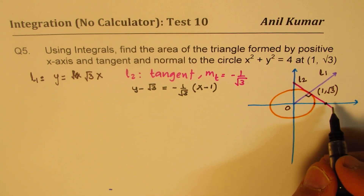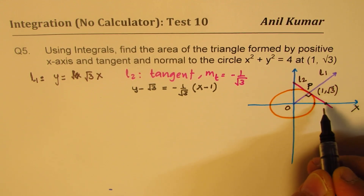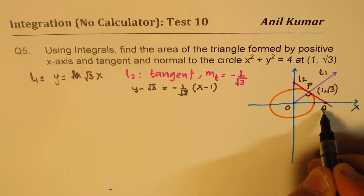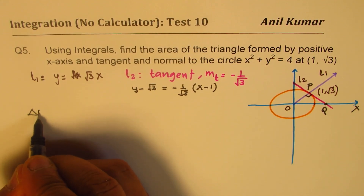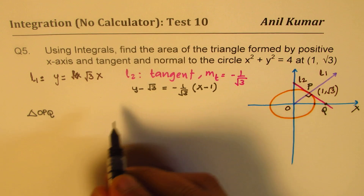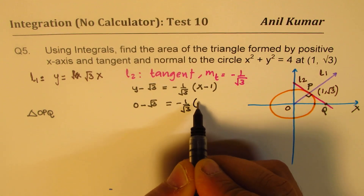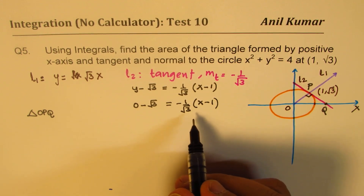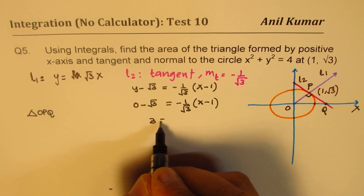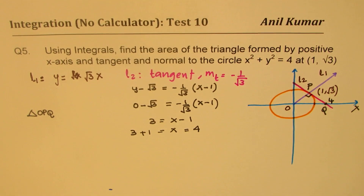We need to find the x-intercept Q, since the area is formed by the x-axis, the normal, the tangent, and this point. So we are looking at the area of triangle OPQ. To find Q, we substitute y = 0. So 0 − √3 = (−1/√3)(x − 1). Cross-multiplying, we get 3 = x − 1, so x = 4. The point Q is at (4, 0).